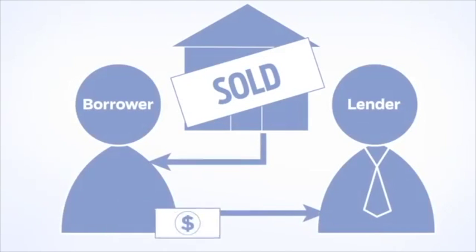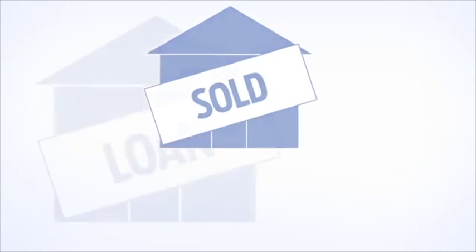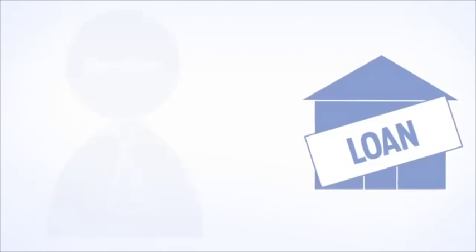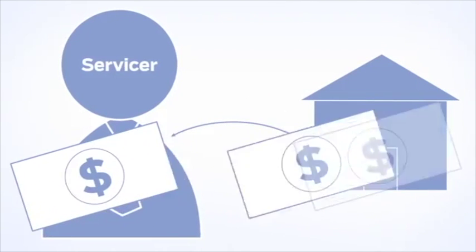A homeowner buys a house and a lender makes a loan. The loan is then resold and the money is used to make more loans. A servicer collects mortgage payments from the original loan borrower.